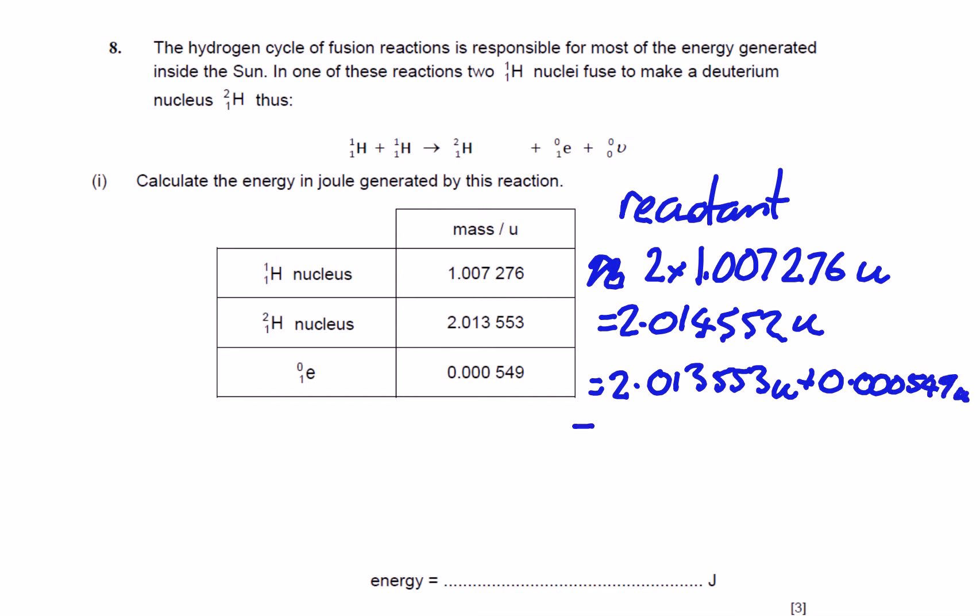So if we subtract the mass of our products from our reactants, that will tell us the change in mass, which is going to equal 4.5 times 10 to the minus 4 atomic mass units.